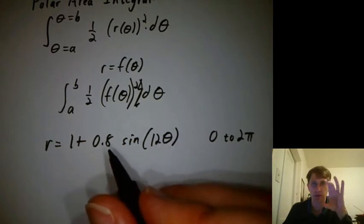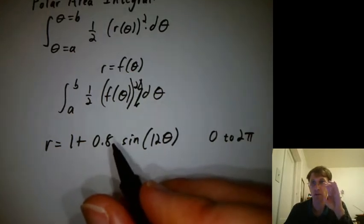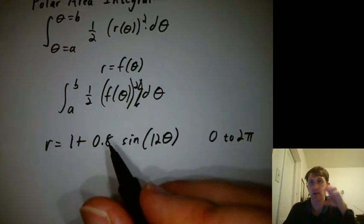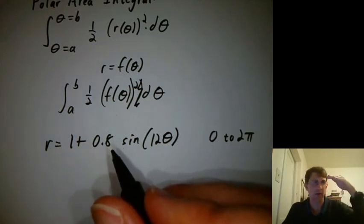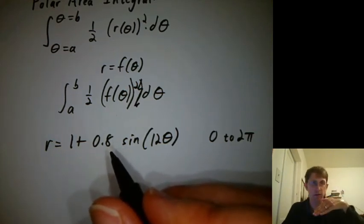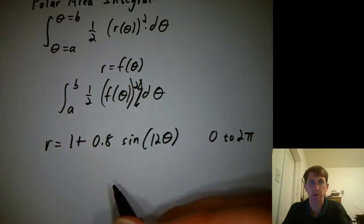And then we're damping down the amplitude a little bit, so it won't be going positive 1 to negative 1. It will be going negative 0.8 to positive 0.8. And then we're adding 1 to that, so it's kind of hovering around 1, going down to 0.2, going up to 1.8. So let's go graph it quick.